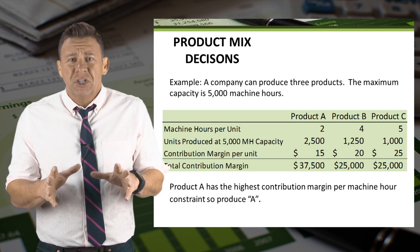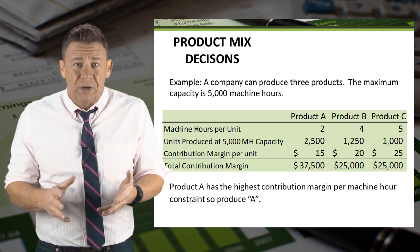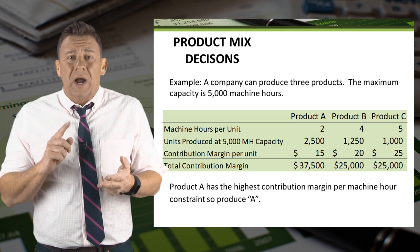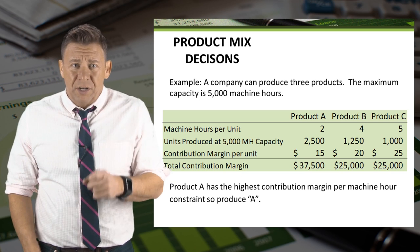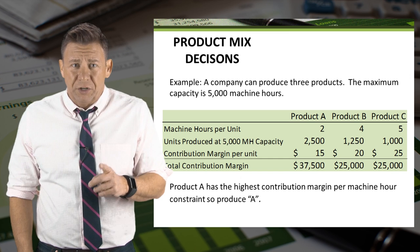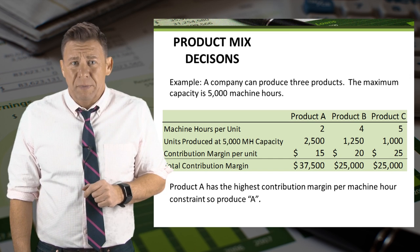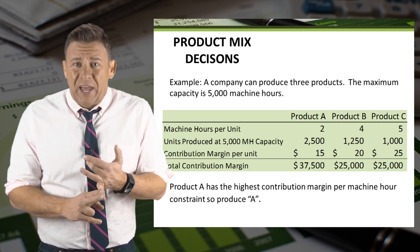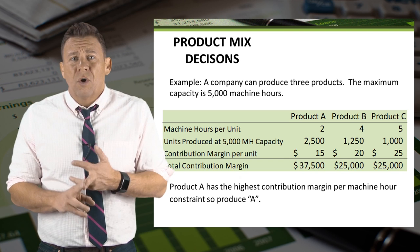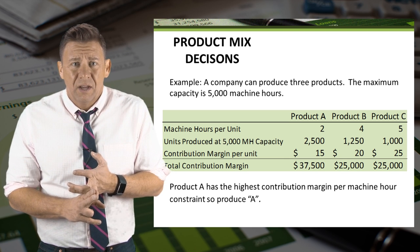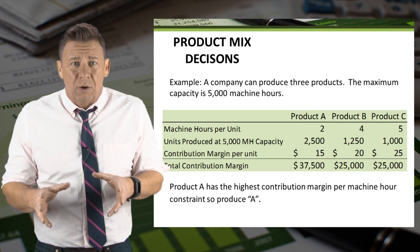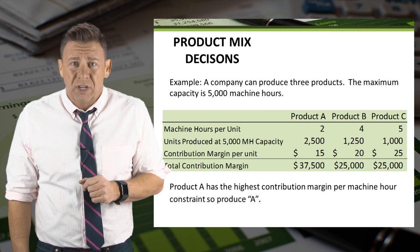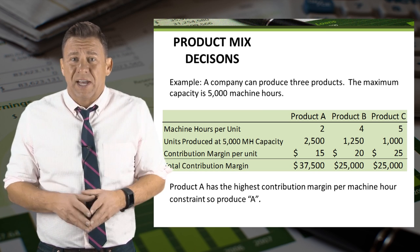With the additional data of machine hours needed to produce a unit, let's figure out the contribution margin per constraint. Product A requires two machine hours to make one unit, product B requires four machine hours to make one unit, and product C requires five machine hours to make one unit. So we could produce 2,500 units of A, 1,250 units of B, or 1,000 units of C. Once we factor in the constraints of machine hours, we see that product A gives us the highest total contribution margin, and is the product that the company should emphasize or prioritize.